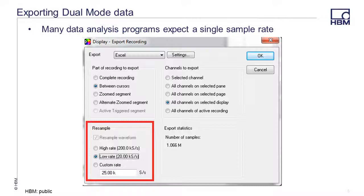Many data analysis programs are not able to support a signal with multiple sample rates. If you export dual-mode data from Perception into such a data format, Perception automatically activates the resample option in the export dialog. The user decides if they want to export data at the low rate, high rate, or custom rate.